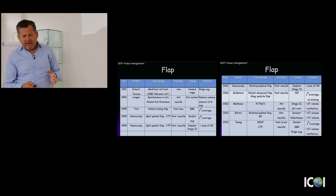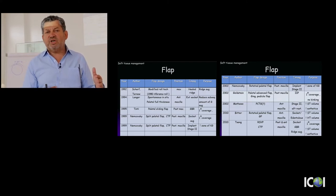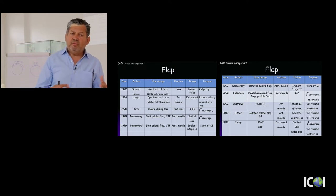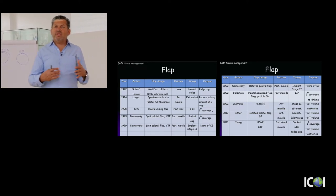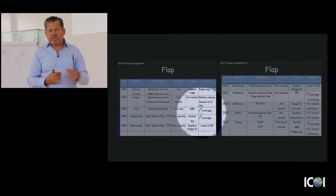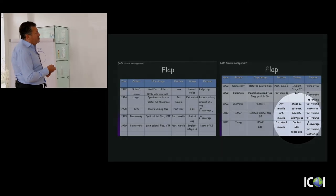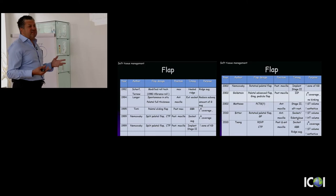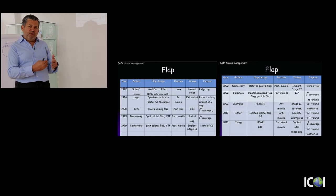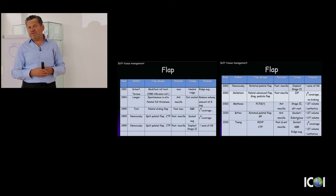In the past we thought that after socket preservation the site requires primary closure. But we know that if we attempt primary closure, we are moving the mucogingival junction from the buccal more to the palate, and then when we uncover the implant we have to do an apical position flap or other soft tissue correction, especially in the aesthetic zone. Many papers quoted here suggest that in socket augmentation and extraction socket procedures we need to improve our soft tissue management skills.